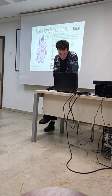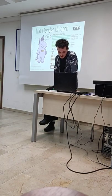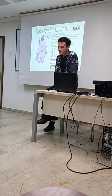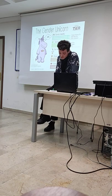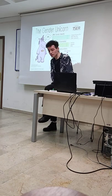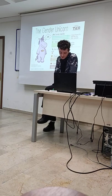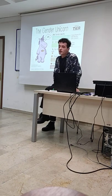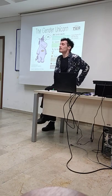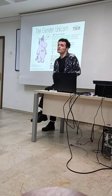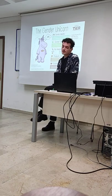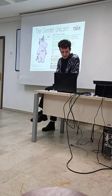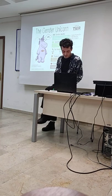First of all, I will present three gender theories, and then I will talk about queer representation history and queer literature. Then I will give two examples: one is Rumi and the other is Nedim, to illustrate the homoerotic type.